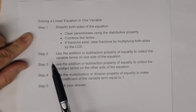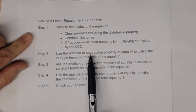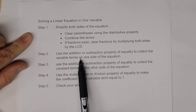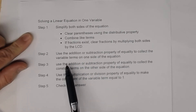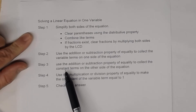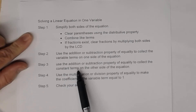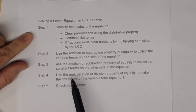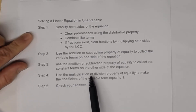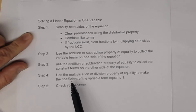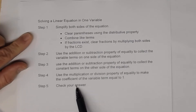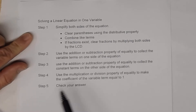Step two is to use the addition or subtraction property of equality to collect the variable terms on one side of the equation. Then use it again to collect the constant terms on the other side. Step four is to use the multiplication or division property of equality to make the coefficient of the variable term equal to one. The last step is to check your answer.